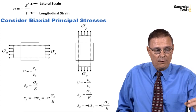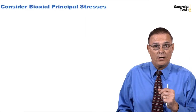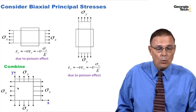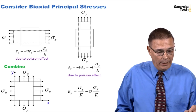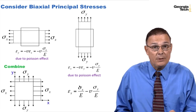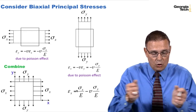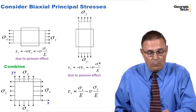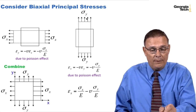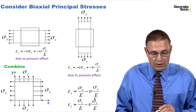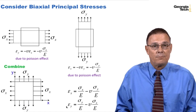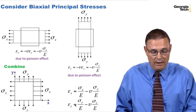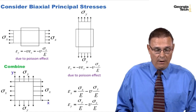Now let's combine the x direction and y direction principal stress results for a biaxial loading condition. For epsilon x, we get sigma x over Young's modulus from Hooke's Law, but we also subtract out the Poisson's ratio effect from biaxial loading in the y direction. Similarly, epsilon y equals sigma y over E minus the Poisson's effect due to stresses in the x direction.